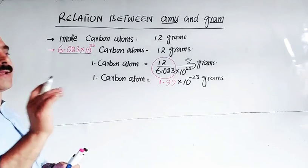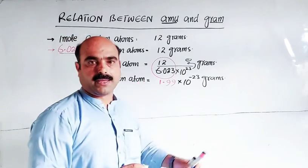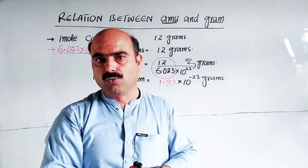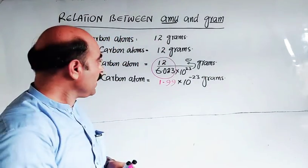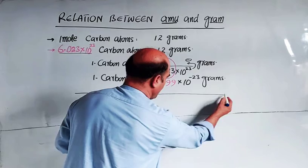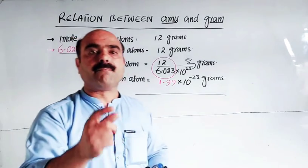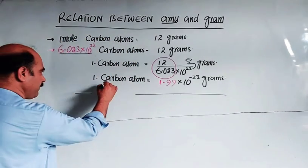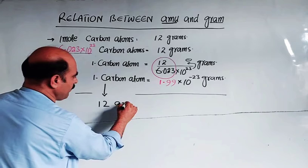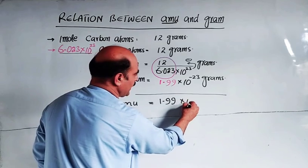Now we will use this relation for the carbon atom. One carbon atom has a mass of 12 amu, which is equal to 1.99 × 10^-23 grams. So 12 amu equals 1.99 × 10^-23 grams.